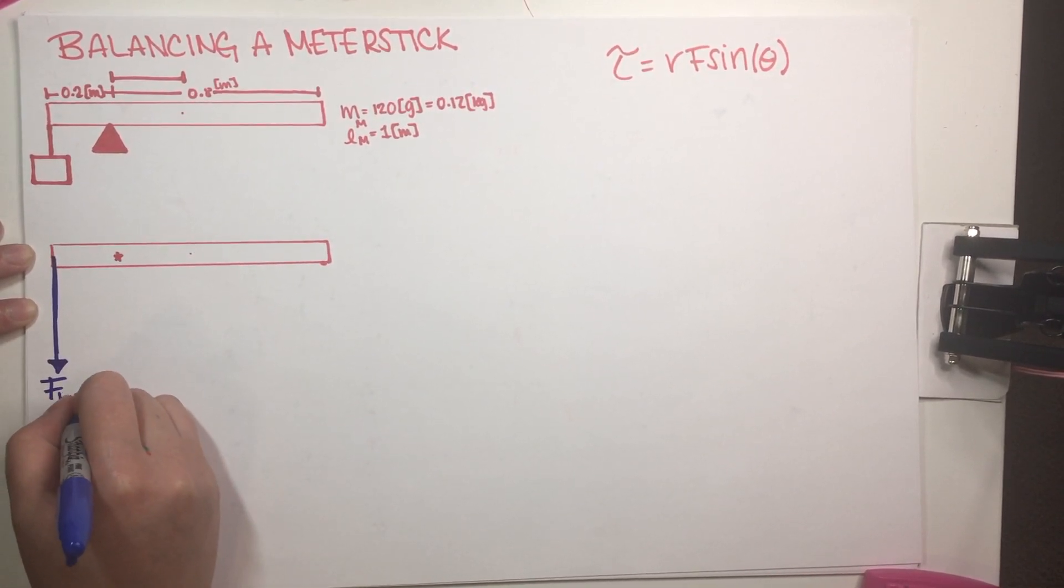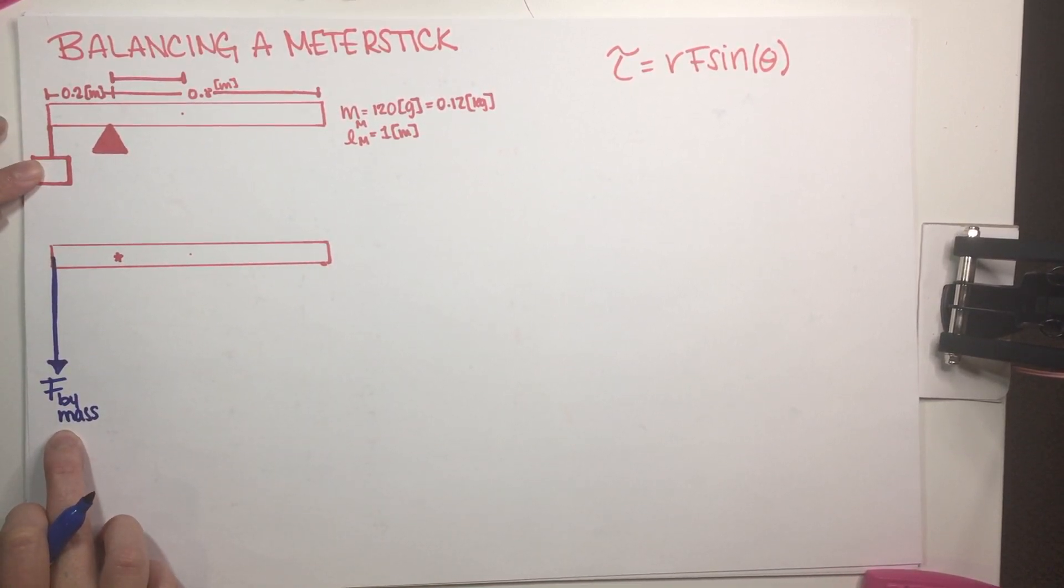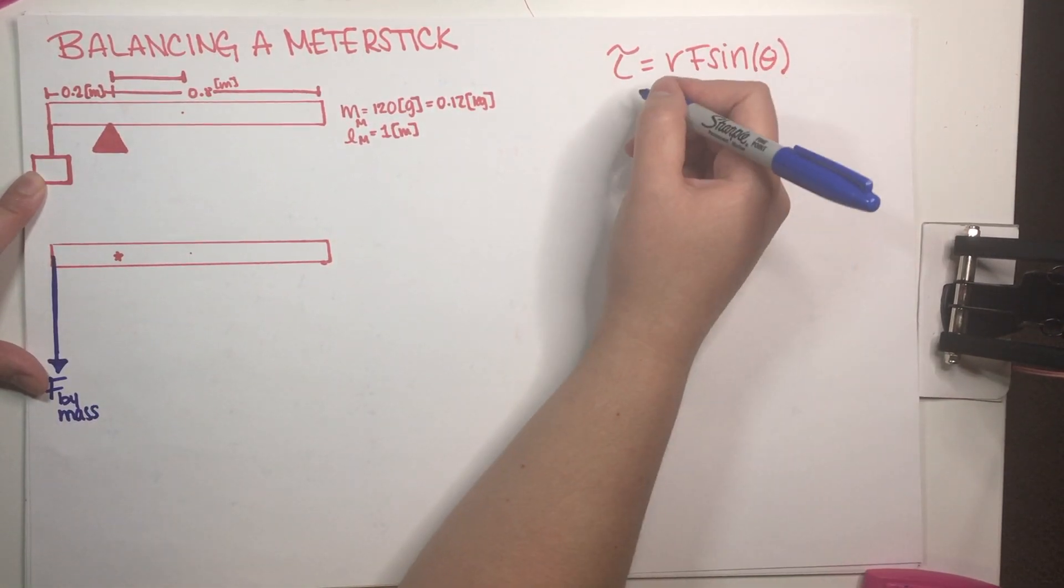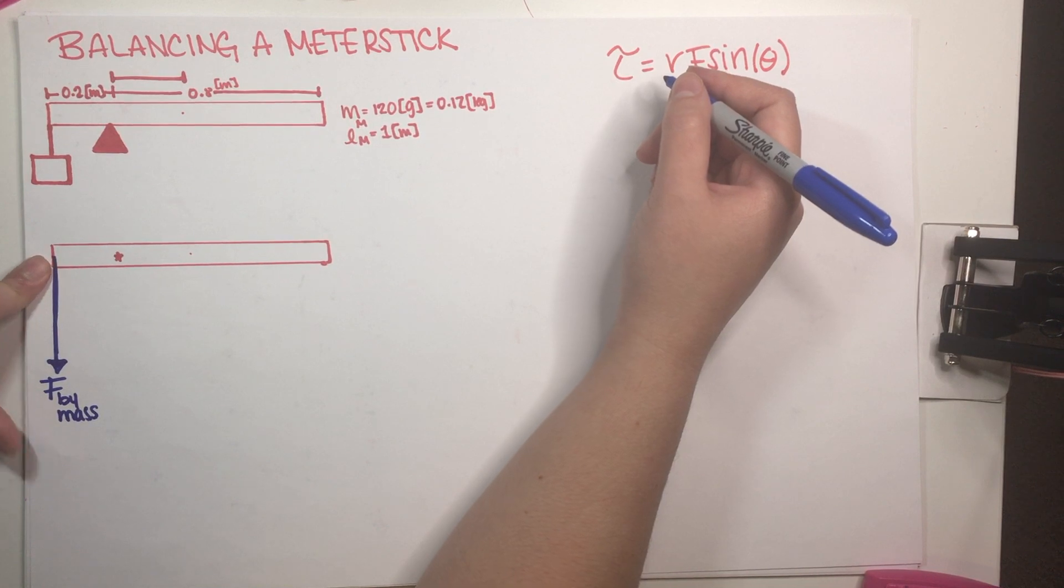So I'm going to go ahead and put an arrow over here and call it force by mass. I don't really know the magnitude of this because in order to figure out the magnitude, I would need the mass, and that is exactly what I'm trying to figure out. But I'm just going to call it force by mass.